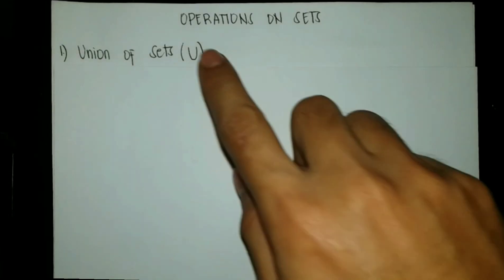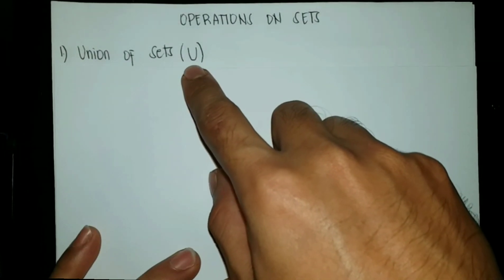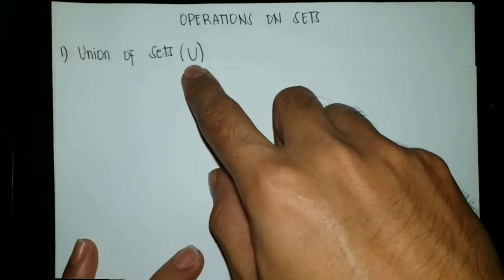The symbol for the union of sets will be this — it looks like a U.